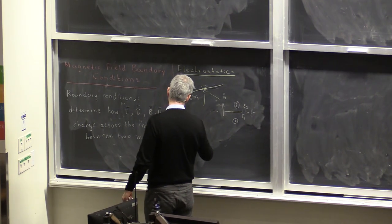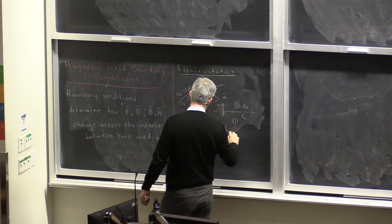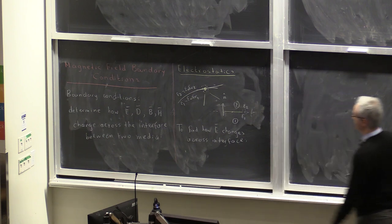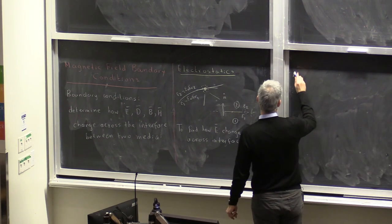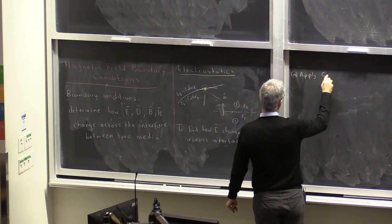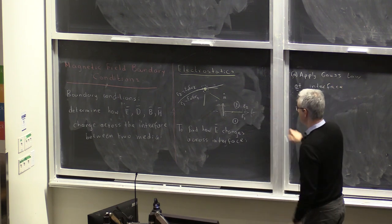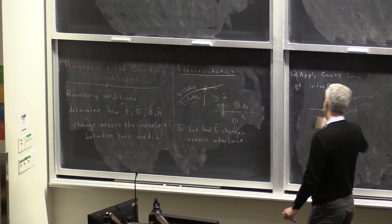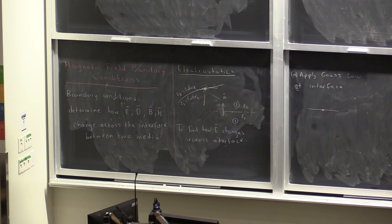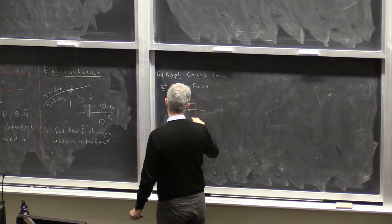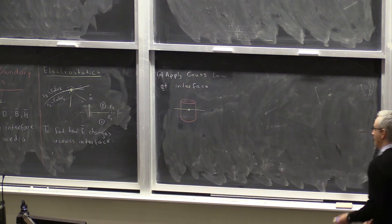To find how E changes across the interface, we invoked the fundamental postulates of electrostatics and applied Gauss's law at the interface. We took the area around the point of interest where we want to calculate the boundary condition, and defined a very small cylinder with a top area, sides, and a bottom, and applied Gauss's law there.